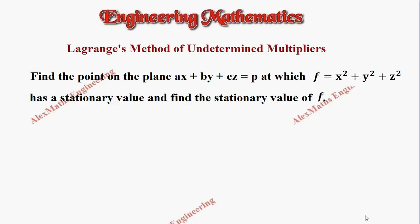Hi students, this is Alex here. In this video we are going to find the point on the plane ax plus by plus cz equal to p at which f, given as x square plus y square plus z square, has a stationary value. We have to find the stationary value of the function using Lagrange's method of undetermined multipliers.